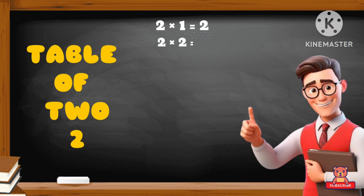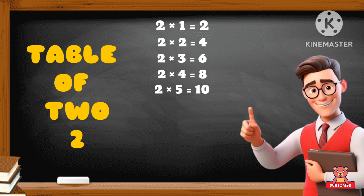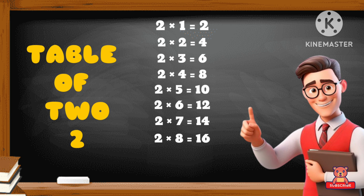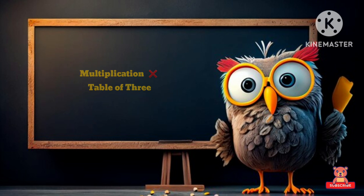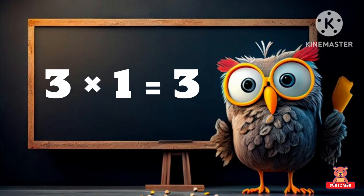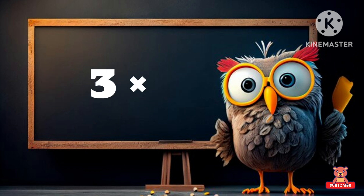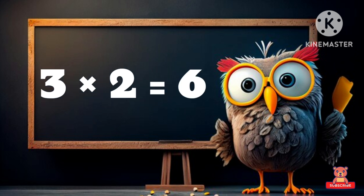Two nine's a eighteen, two ten's a twenty. Move to next — multiplication table of three. Three one's a three, three two's a six.